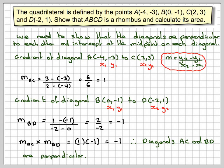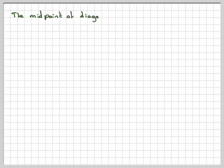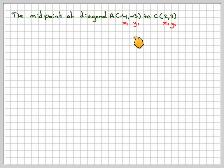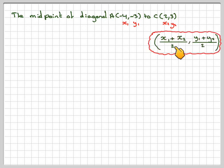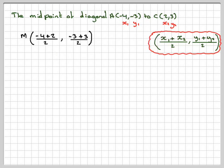Now we need to show the diagonals intercept at the midpoint on each diagonal. The midpoint of diagonal AC, from A(−4, −3) to C(2, 3), using the midpoint formula (X1 + X2)/2, (Y1 + Y2)/2, gives (−4 + 2)/2, (−3 + 3)/2 = −2/2, 0/2 = (−1, 0).